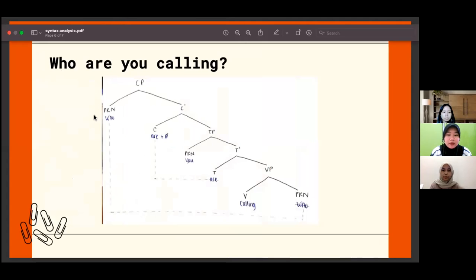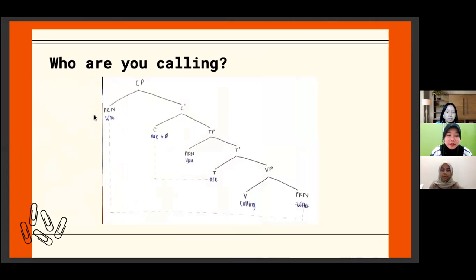This is the second question from WH questions: 'Who are you calling?' As you can see, it's a non-echo question, and the echo question is 'You are calling who.' The tree diagram on the slide tells us that there are two movements.